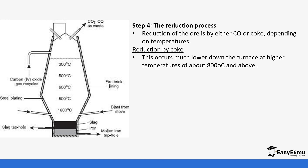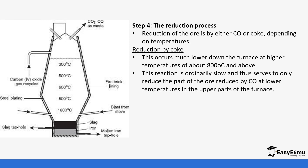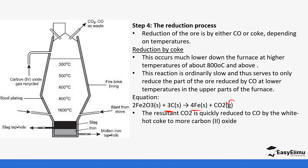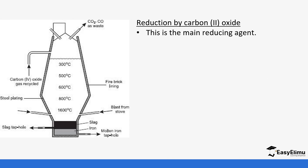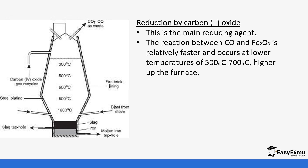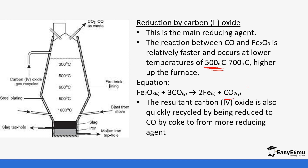Carbon monoxide and coke reduce the iron oxide at temperatures of about 800 degrees Celsius. Iron(III) oxide reacts with carbon to form iron and carbon dioxide, and the resulting carbon dioxide is reduced back to carbon monoxide. There is a constant production of carbon monoxide due to the coke present in the blast furnace. Further, iron(III) oxide is also reduced by carbon monoxide at a lower temperature to form iron and carbon dioxide, which is then recycled to produce more carbon monoxide.